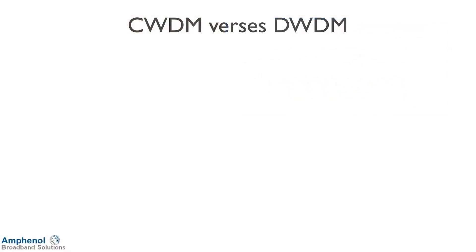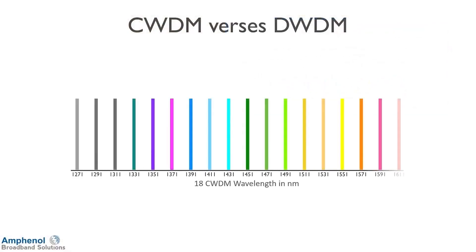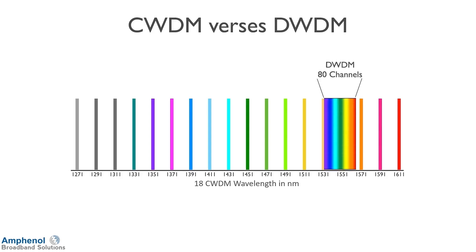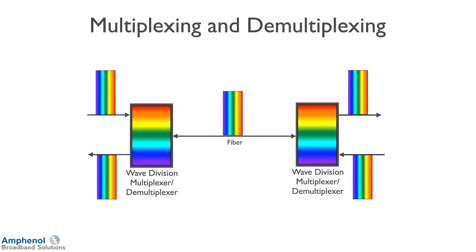Here I'm showing where CWDM resides versus DWDM. I'm showing the 18 CWDM wavelengths from 1271 to 1611 nanometers, and overlaying the 80 DWDM channels — you can see we can squeeze 80 channels into a very small spectral area. With multiplexers and demultiplexers, we can have multiple wavelengths on a single fiber, which is very effective and efficient.